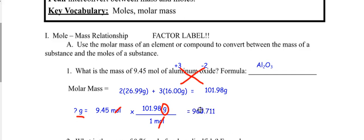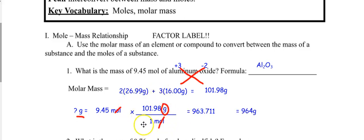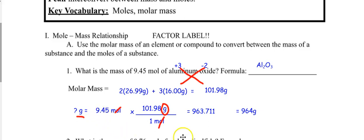Do you really need six digits in your answer? No. I have three sig figs in my given, so I need three here — round up to 963. Why don't the molar mass digits limit sig figs? Because the molar mass of aluminum oxide is always 101.98 — it's not a measured quantity here. Your given always determines the number of sig figs.